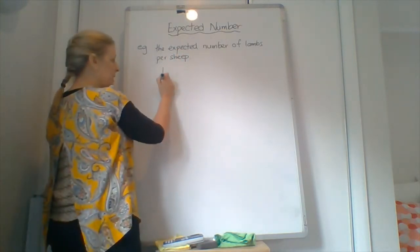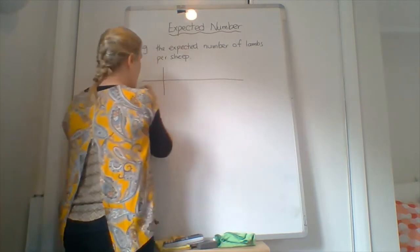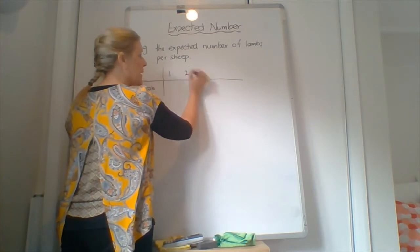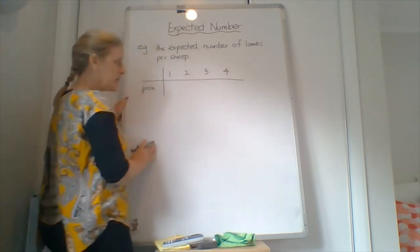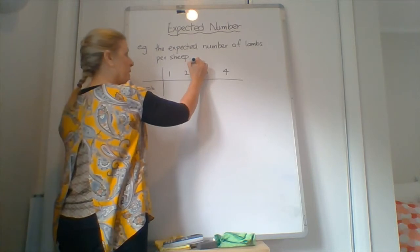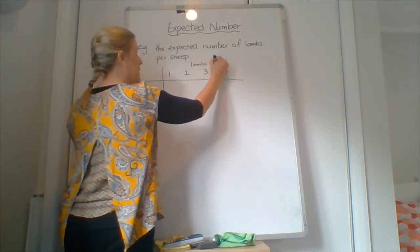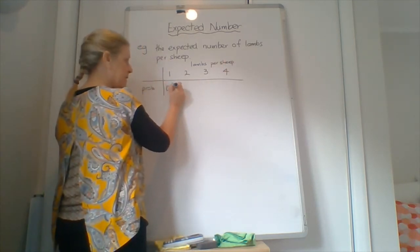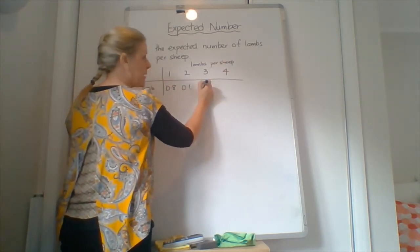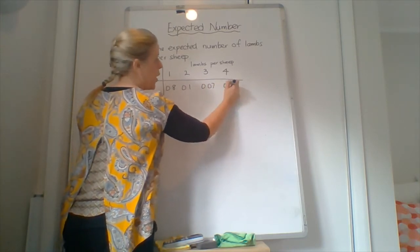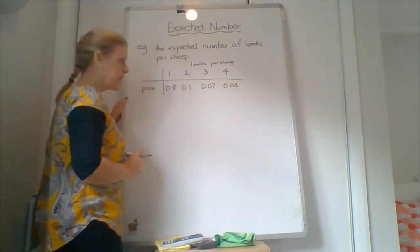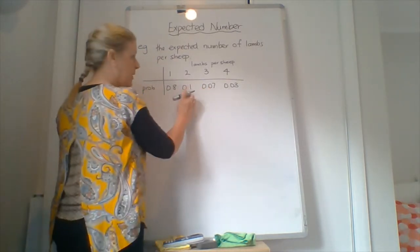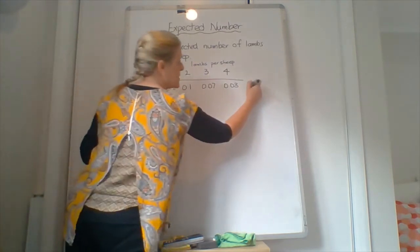Alright, so a farmer's done a little survey and he knows the probability of getting one lamb, two lambs, three lambs and four lambs. Alright, this is the number of lambs per sheep. So 0.8, 0.1, 0.07 and 0.03. Now that line there should always add up to one. So that's 0.1, 0.1 is 0.2 and 0.8 is 1. So that equals one. Everything's taken into consideration.